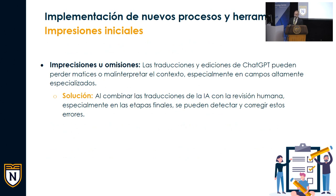Luego de esas primeras pruebas y conversaciones con el equipo, hemos identificado algunas impresiones como parte del proceso de retroalimentación, y hemos encontrado algunas imprecisiones u omisiones. Cómo se soluciona es combinando lo ejemplificado: no es suficiente con lo que provee la herramienta; nosotros no quedamos eximidos de la responsabilidad de velar porque sea una traducción adecuada. No es aceptable que alguien diga 'pero eso fue lo que ChatGPT me produjo.' Especialmente en las etapas finales, hay que detectar y corregir esos errores.